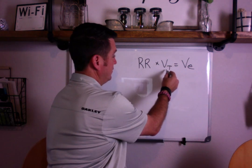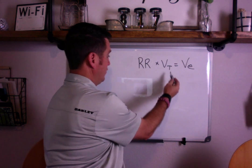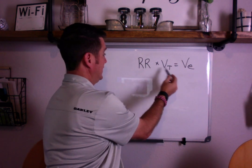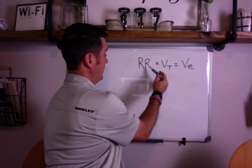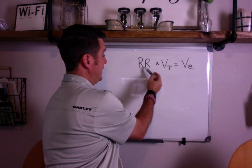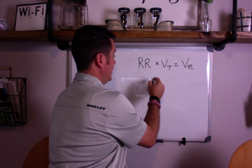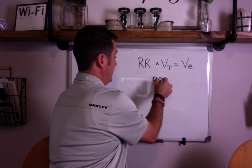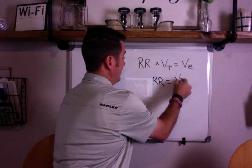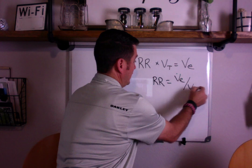If you know the tidal volume and you want to solve for respiratory rate, then you just have to get respiratory rate over here by itself. So if you divide both sides by tidal volume, you'll see where respiratory rate equals minute ventilation over tidal volume.